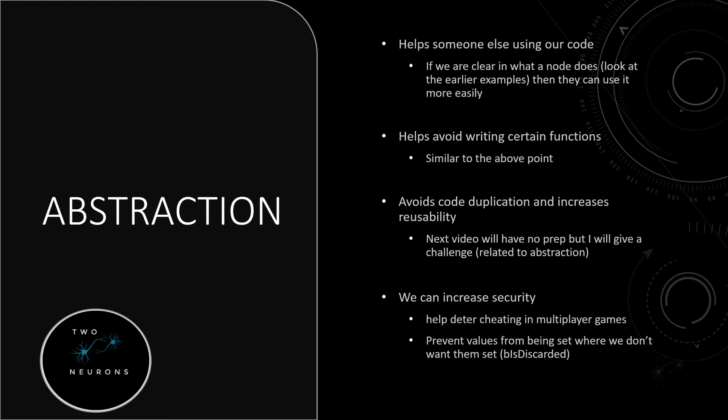It helps someone else who's using our code. Think about that Check Has Stamina node — it's clear what it does. They can see how to use it, they can see that it returns a check on whether someone has stamina or not. They don't need to open it up to understand what it does. It also helps avoid writing certain functions over and over again — if you already have something that does a task and it's clear that it does it, it's going to help you avoid doing it multiple times in multiple ways. Hint, hint — we're going to violate that one, and it's going to be part of your challenge for one of the upcoming videos.